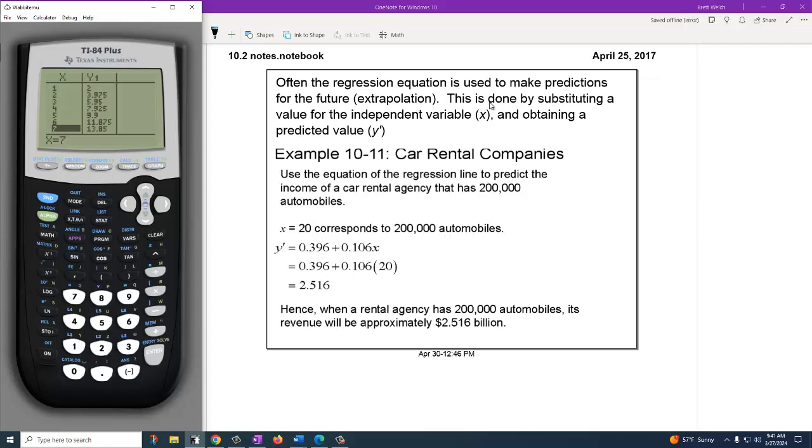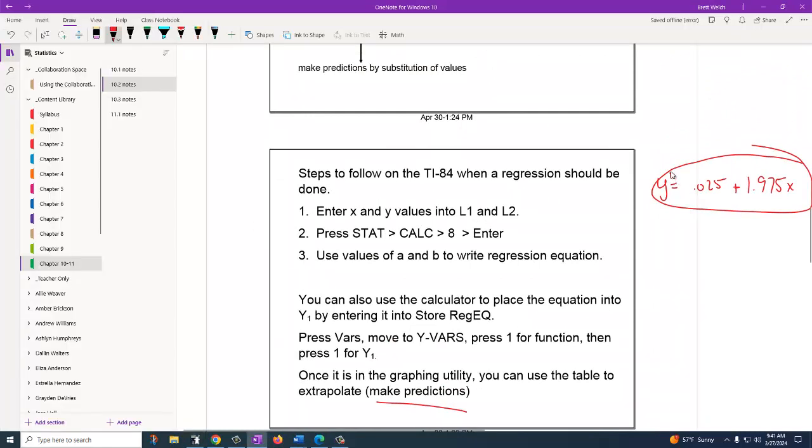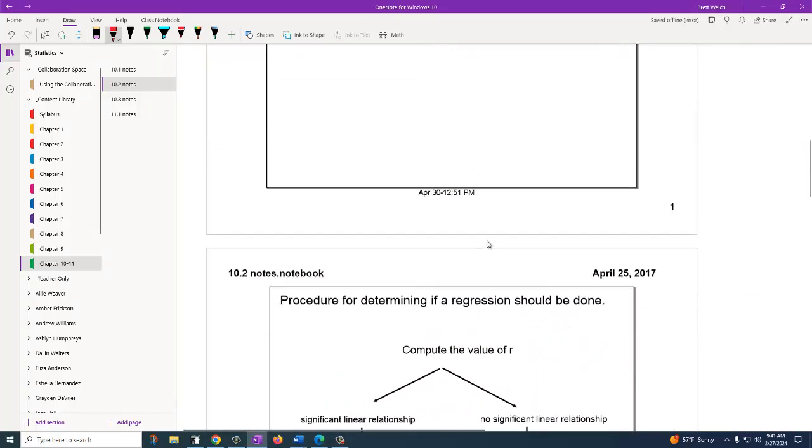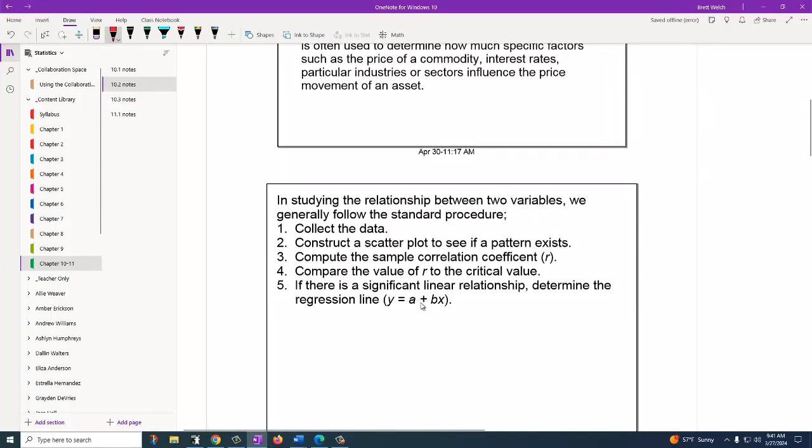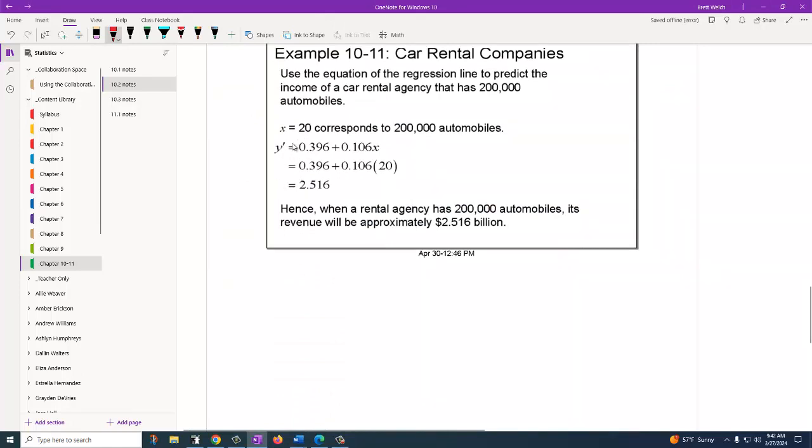Oftentimes your regression equation is used to make predictions of the future. It's called extrapolation, extrapolating the data. This is done by using the x value, picking an x value and plugging it in, and finding a predicted y value. Notice these equations don't say y. They actually do say y prime. We're identifying this is not really the equation. As a side note, if you're in calculus, that y prime means something different. Here in statistics, this is just our way of saying it is a regressed equation. It is not necessarily the correct equation. And so we use that y prime to predict our value. I guess it would be y equals there, but when we do a substituted value, it comes out as y prime. At any rate, if we just plug in 20, we get a number, and then we can make a prediction for the future.